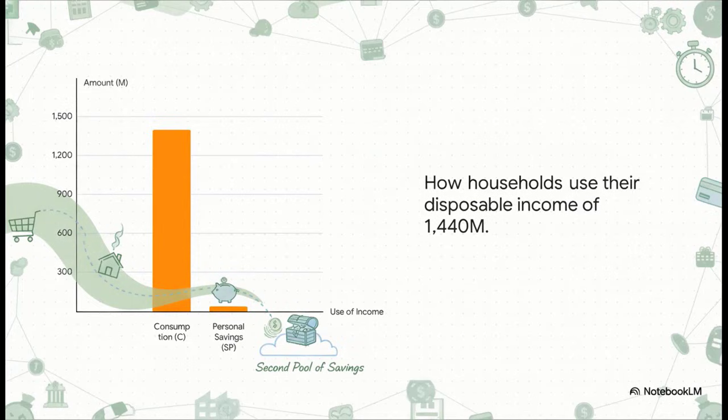So people have $1,440 million in their pockets. What do they do with it? In our model, they spend almost all of it — $1,400 million goes right back into the economy as consumption. And that little bit left over, that $40 million, is what they save. That's our second pool of savings.